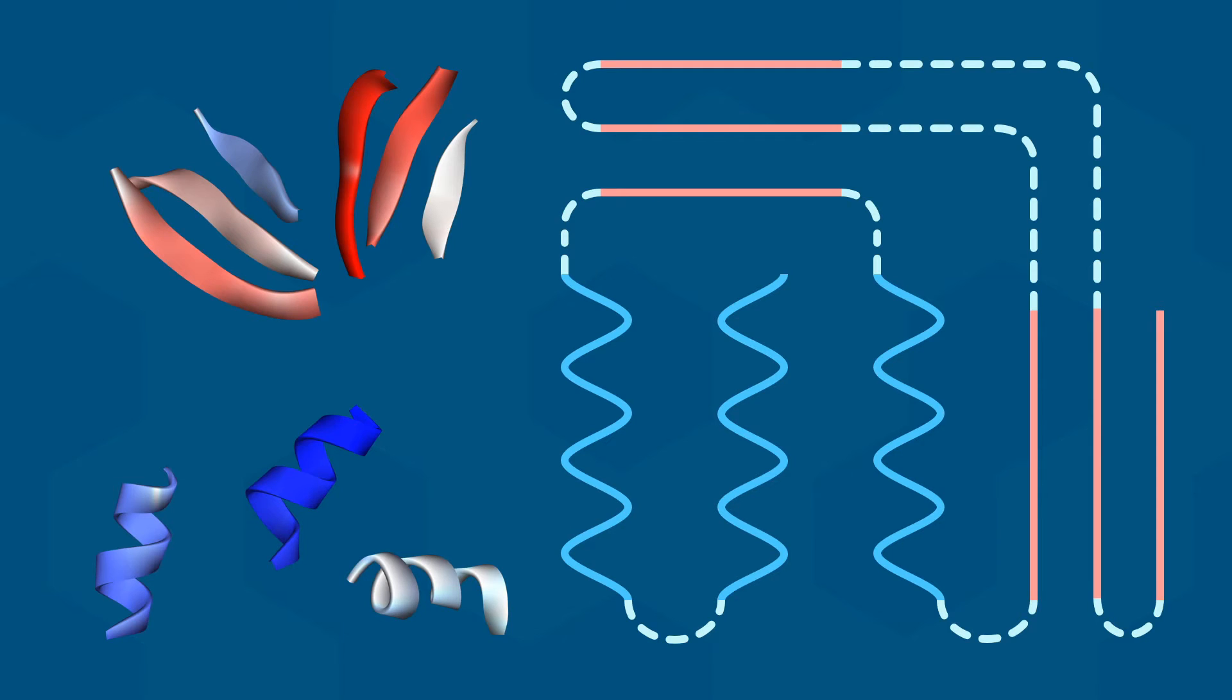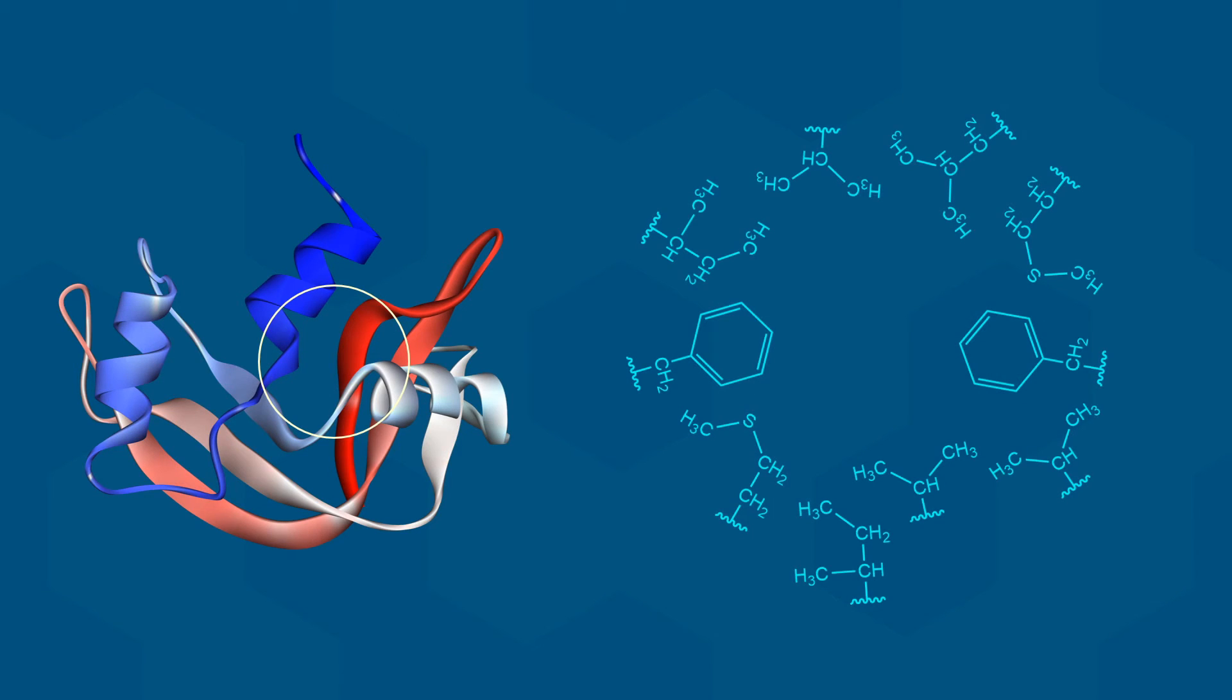The tertiary structure of a protein is due in large part to non-covalent interactions between the side chains within the protein. For example, in this region of RNase, there is an inner core of hydrophobic side chains in close proximity to each other. These side chains are packed together inside the protein away from water. This results in a large number of induced dipole to induced dipole interactions forming between these side chains.